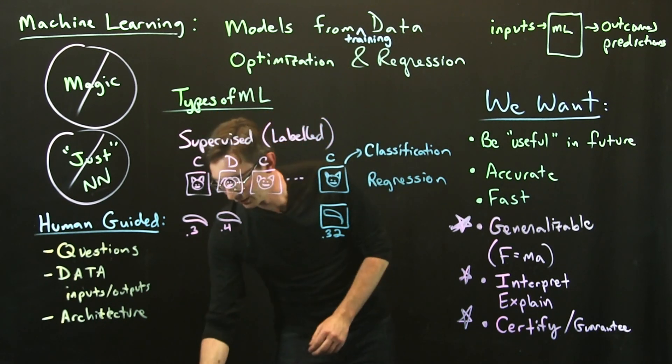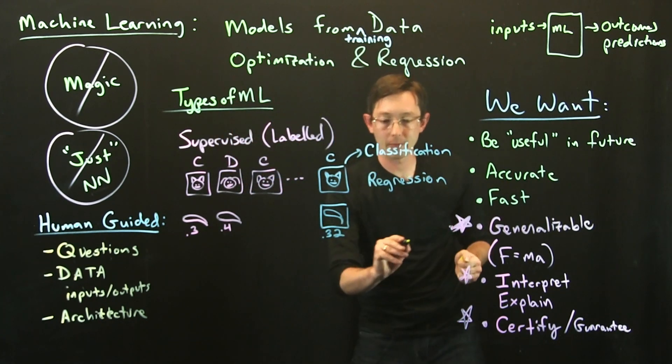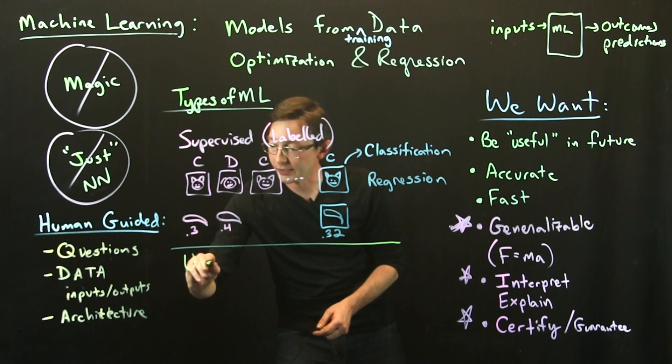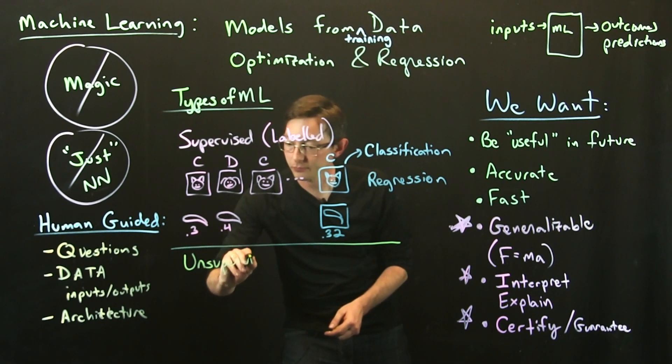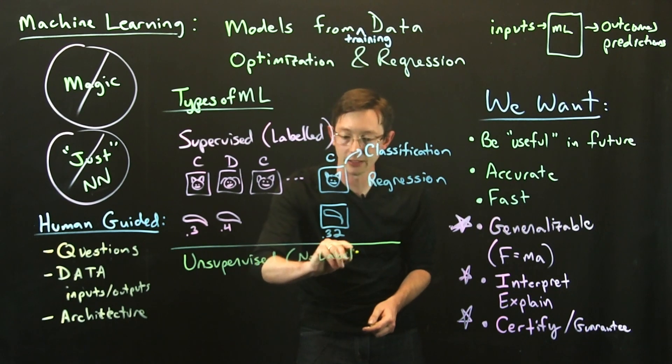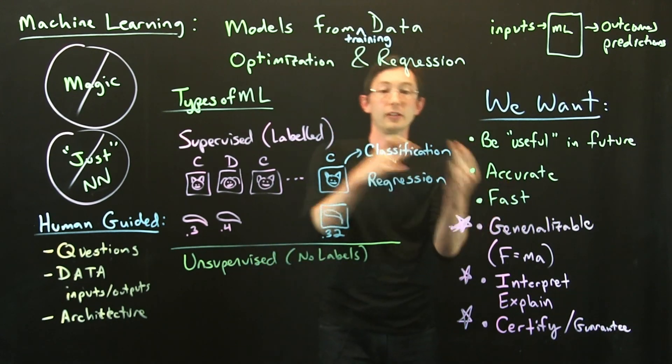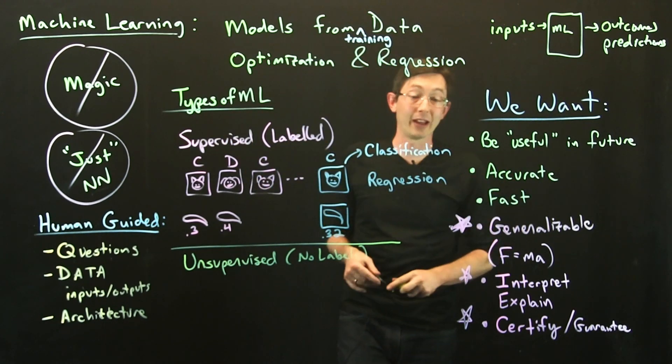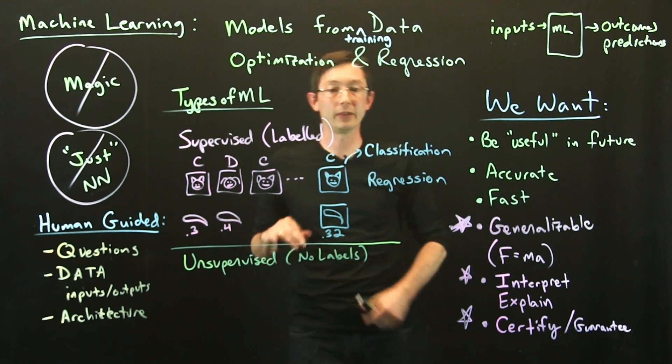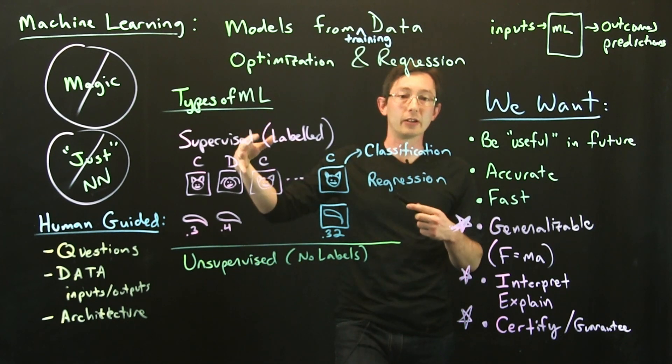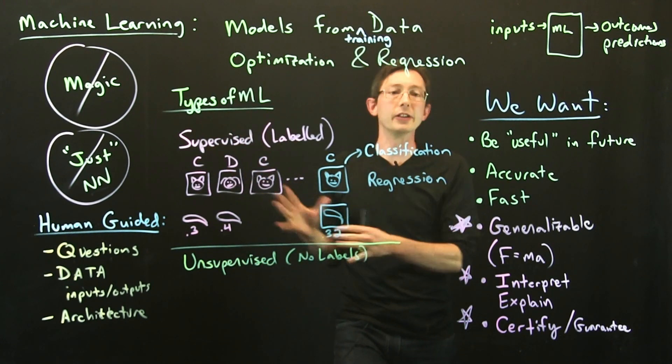Another large category is what we call unsupervised. As you might have guessed, there are no labels. There's no expert telling you what's different, what's a cat, what's a dog, what the drag coefficient is. You just get a bunch of data and you have to make heads or tails—or cats and dogs—of it. Unsupervised machine learning is very interesting. This is kind of what we mean when we say data mining.